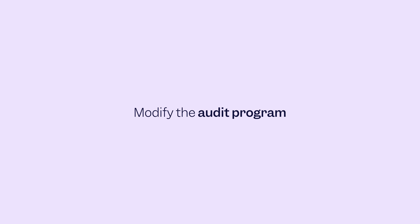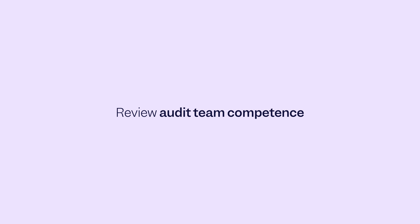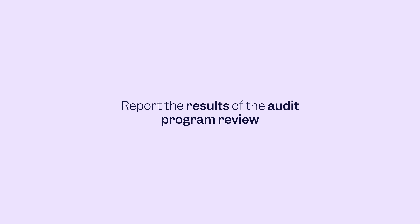Continuously seek areas for value creation and improvement to streamline the auditing process and overall performance. Audits are not static — you can adapt them based on lessons learned, evaluations, and improvement opportunities identified. Another responsibility is to continually assess the knowledge, skills, and abilities of audit team leads and auditors. Finally, the last responsibility is to report the results of the audit program review to upper management. Reporting these results ensures that any necessary changes are implemented in a timely manner and that management is kept informed of any risks or opportunities that may arise.